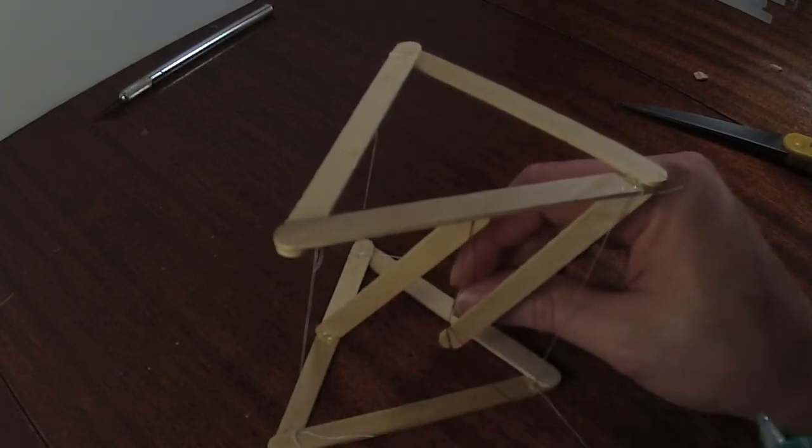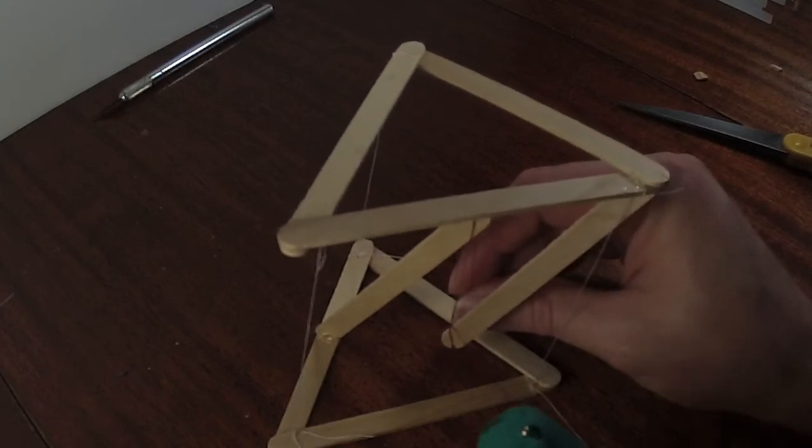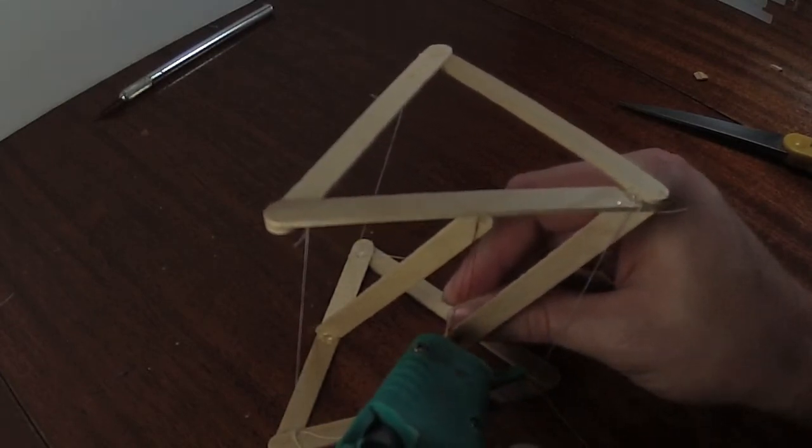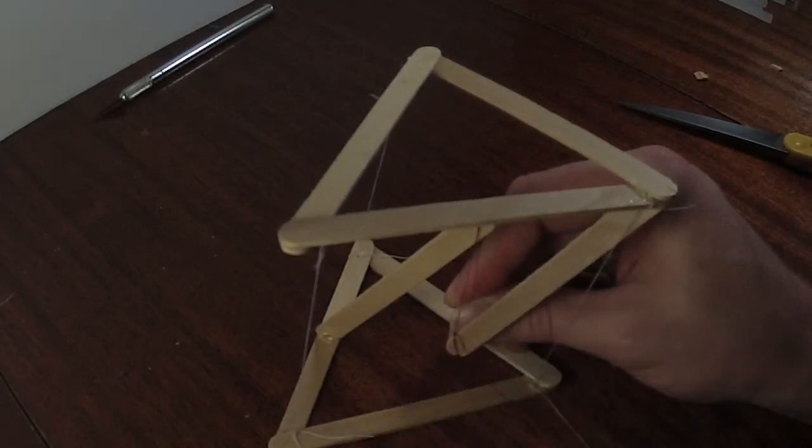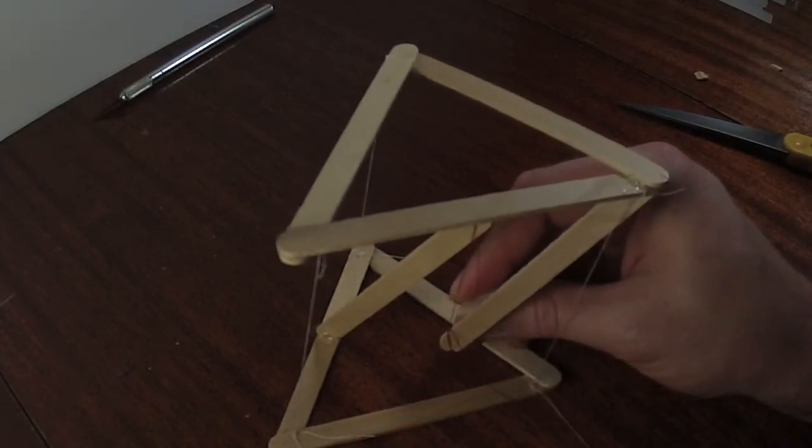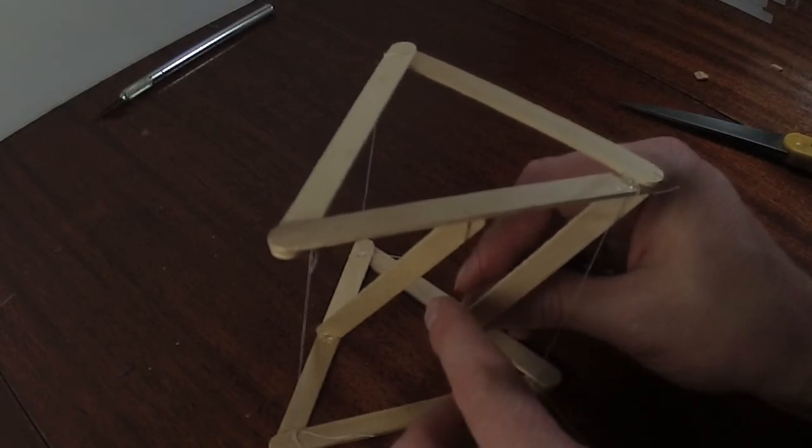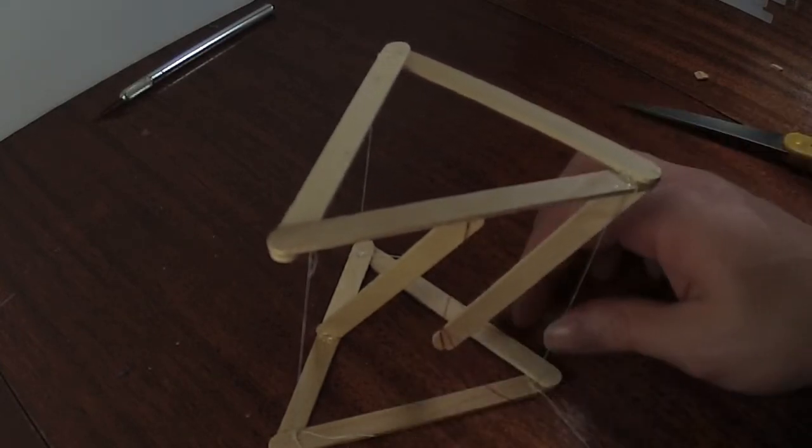Because what I'm going to do after that is I'm going to take that string, going to tack the bottom with hot glue as well, just so that doesn't move around while I'm tying it. And we're going to take that red string that's going through the bottom piece, and I'm just going to tie a knot.